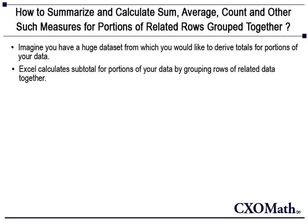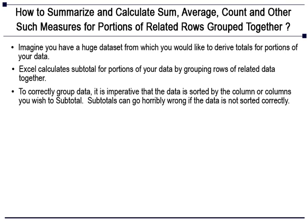Excel calculates subtotals for portions of your data by grouping rows of related data together. It automatically inserts subtotals and a grand total in the table. Grouping is important in this activity. To correctly group data, it is imperative that the data is sorted by the column or columns you wish to subtotal. Subtotals can go horribly wrong if the data is not sorted correctly.